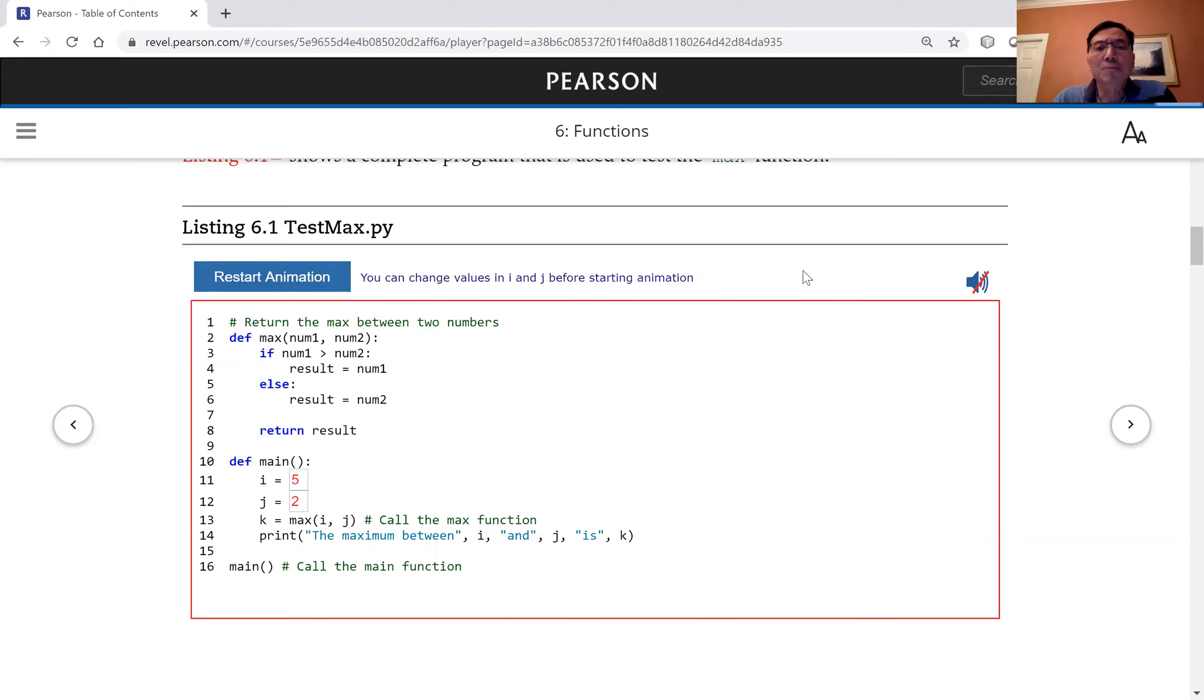For each code animation, you can turn on the audio. Now start animating. The program loads the definition for the max function to memory. The program loads the definition for the main function to memory. The program starts execution by invoking the main function.